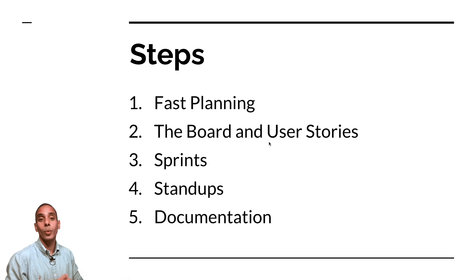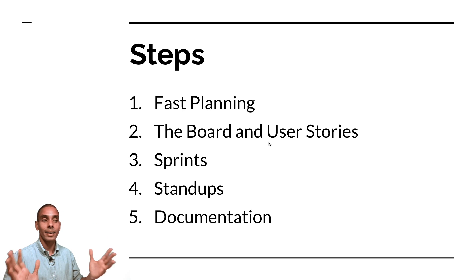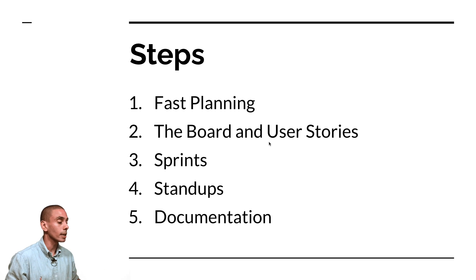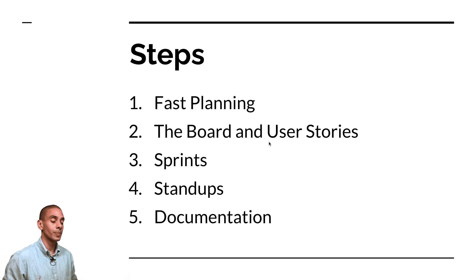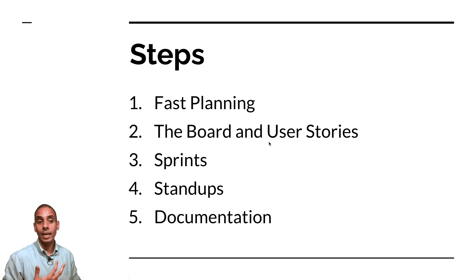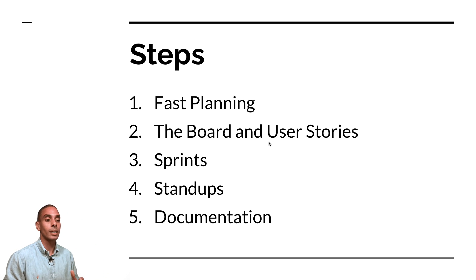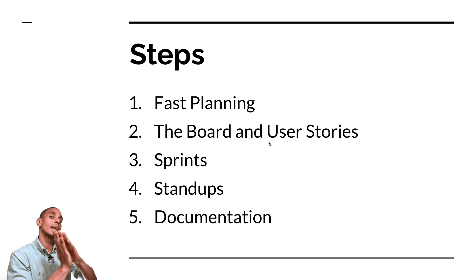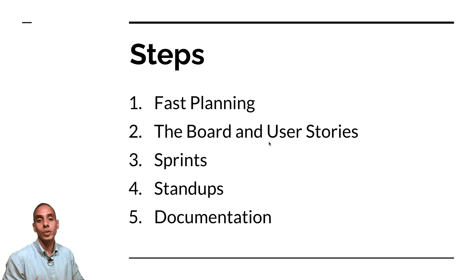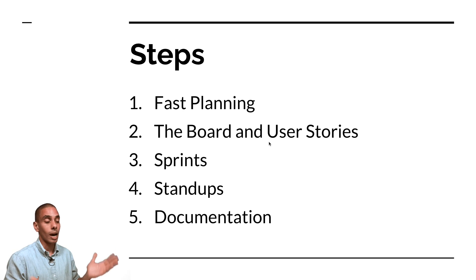The five key steps we're going to be going through in this video are: fast planning and how to collect business requirements quickly; how to set up a Kanban board and work with user stories; how to plan your project sprints; how to work with standups and daily meetings; and how to translate everything into documentation that maps through as a traceability matrix.